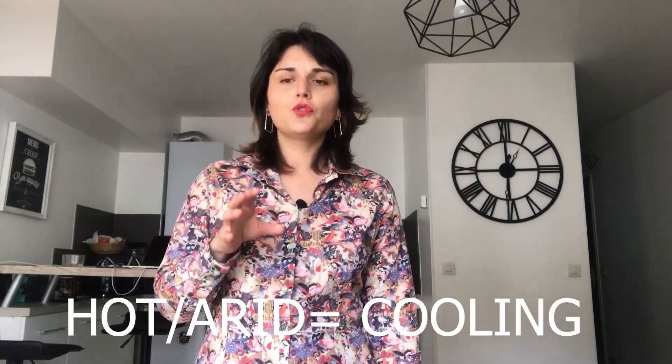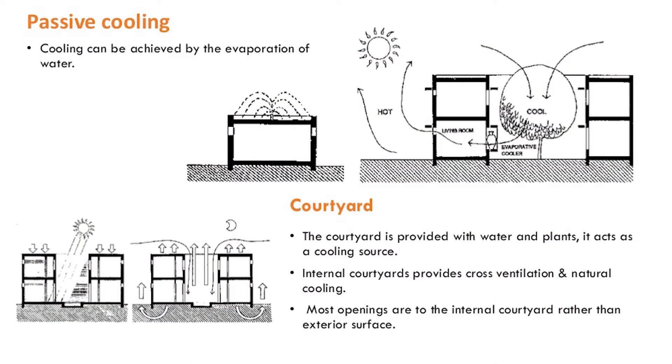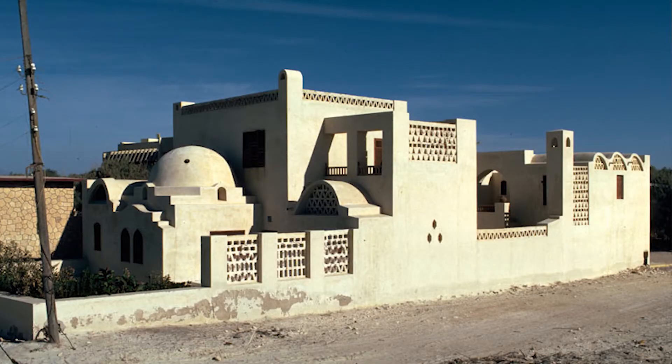For the hot or arid climate, the word I would choose would be cooling. It's really important to cool all the spaces. If you look at architecture adapted to this kind of climate, there are quite often patios or courtyards in the house. Because if you put a courtyard with a pool or a tree in it, it permits to cool the air and restitute it into the house. A vernacular example in this climate would be the Halawa house in Egypt.